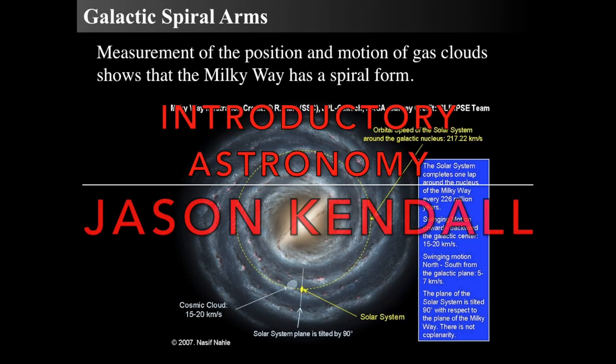Hello, this is Jason Kendall. Welcome to the next of my introductory astronomy lectures. This time we're going to be talking about the Milky Way's spiral arms and how they formed and what they look like.